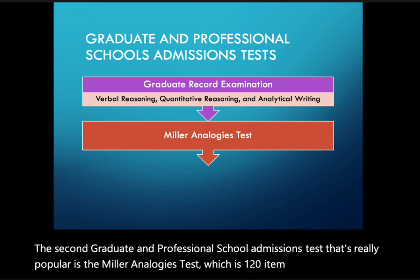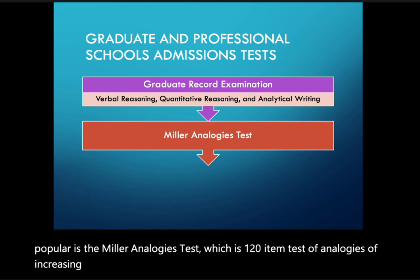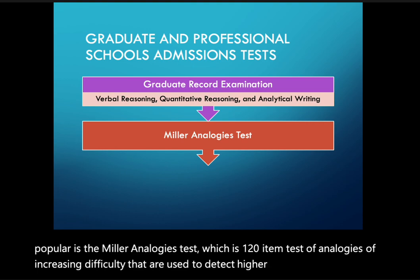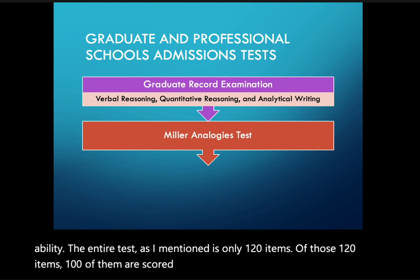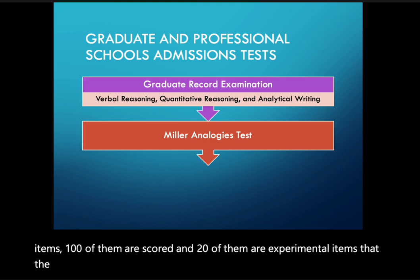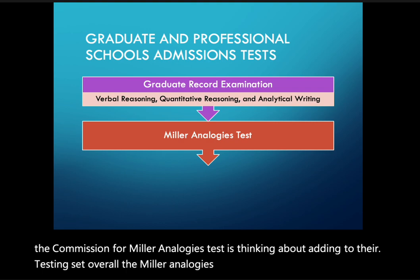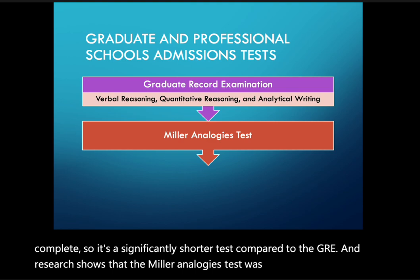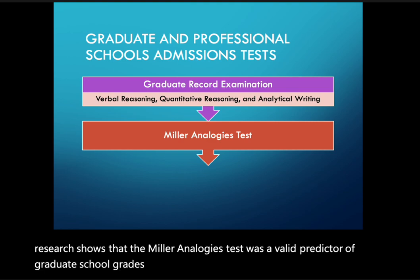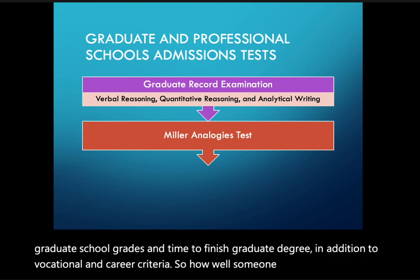The Miller Analogies Test is a 120-item test of analogies of increasing difficulty used to detect higher levels of cognitive ability. Of those 120 items, 100 are scored and 20 are experimental items being considered for future use. The test takes about 60 minutes to complete, making it significantly shorter than the GRE. Research shows the Miller Analogies Test is a valid predictor of graduate school grades, time to finish a graduate degree, and vocational and career criteria.